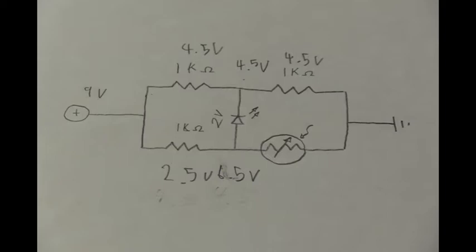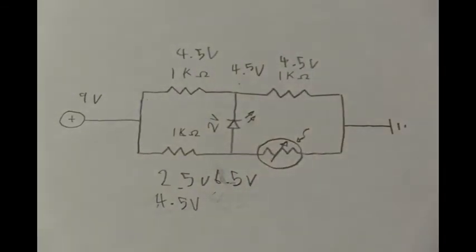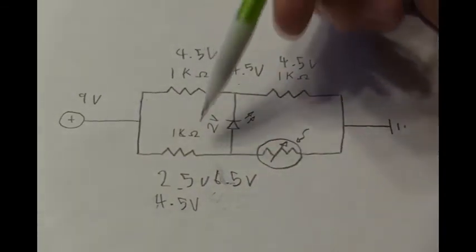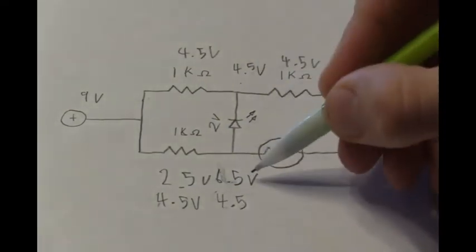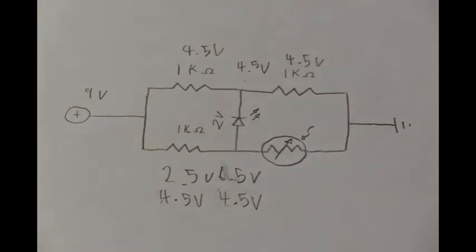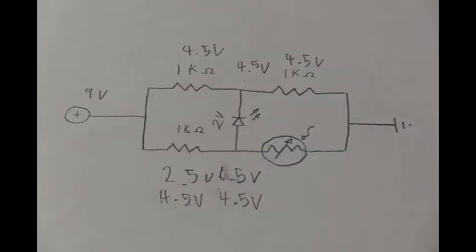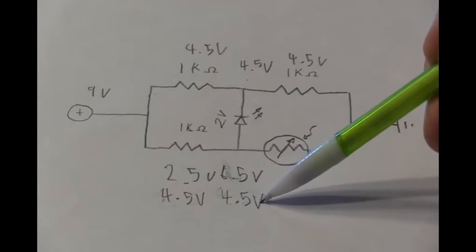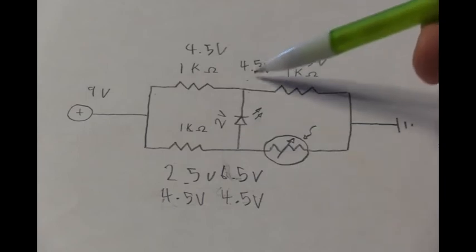So instead of a 2.5 volt drop it might have 4.5 volts. Then the voltage after dropping across this resistor would be 4.5 volts instead of 6.5 volts. And the LED would not light since the Wheatstone bridge is balanced. The 4.5 volts would match the 4.5 volts on this side and no current would flow.